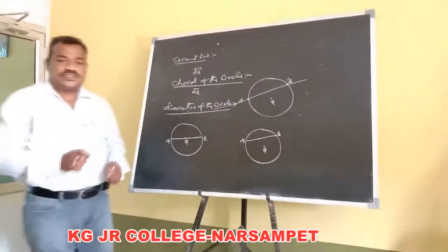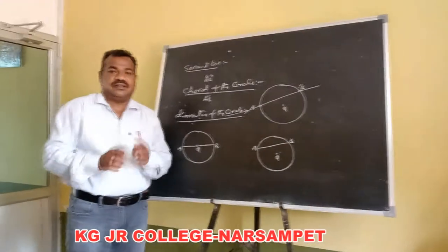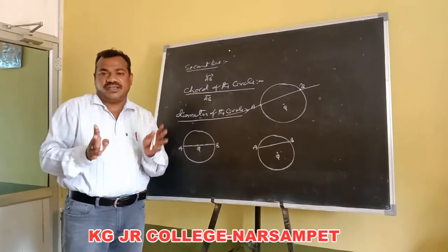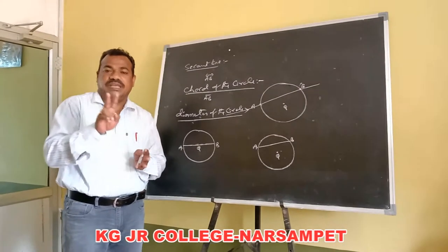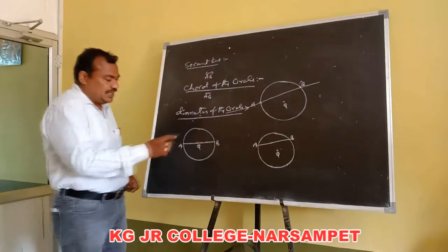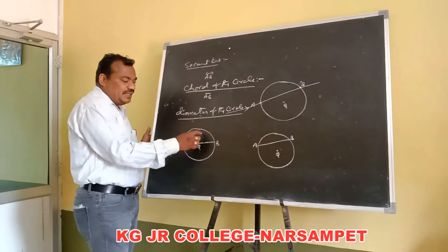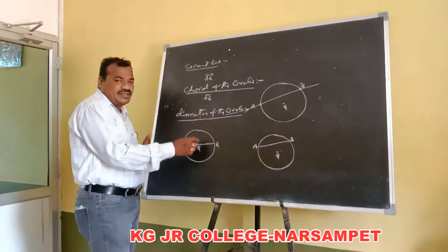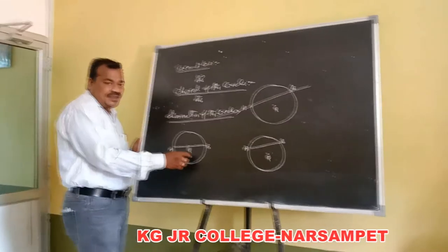The diameter divides the circle into equal parts. Each part is called the semi-circle.